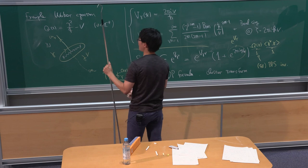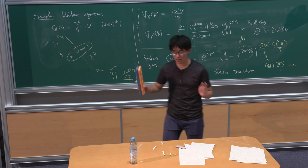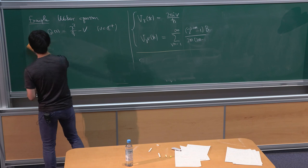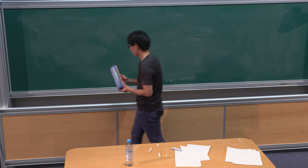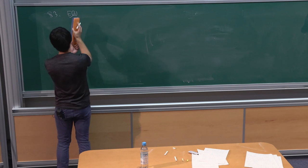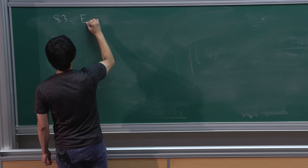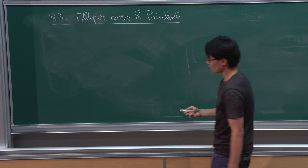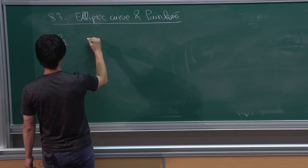Now we know the relation between WKB and topological recursion in the genus-zero case, but something nontrivial happens in the genus-one situation. Then the Painlevé equation appears. So this is what I want to discuss next. Section three: the spectral curve must be an elliptic curve, and the Painlevé equation.